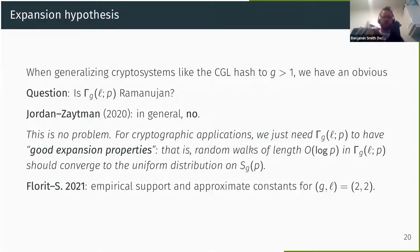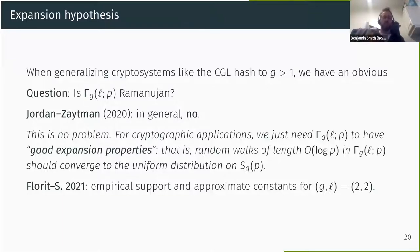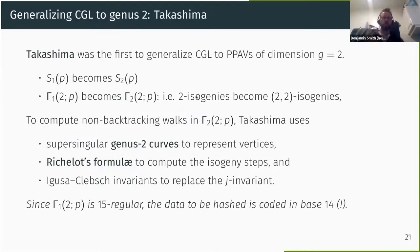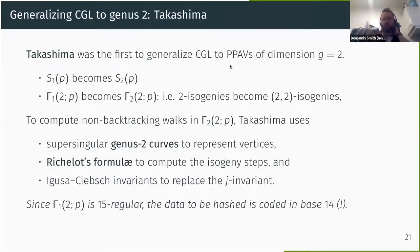This graph is not Ramanujan — there are explicit counterexamples — but that's not really a problem for cryptographers. We just need decent expansion properties: short walks, like a small multiple of log P steps, before we could be anywhere in the graph. With Enric Floret, we've done a lot of experiments and some theoretical work, and we can say that basically this should be good enough for cryptographic applications. We're not as ideal as a Ramanujan graph, but not a million miles away.